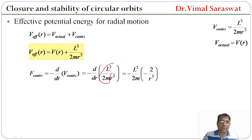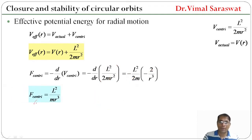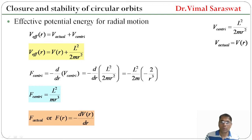Since l² / (2m) is constant, differentiating 1/r² with respect to r gives −2/r³. The negatives cancel, giving F_centrifugal = l² / (mr³). The actual force is F_actual = F(r) = −dV(r)/dr.